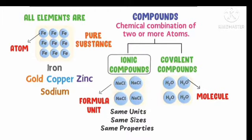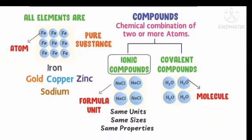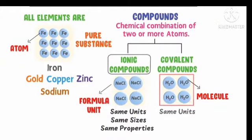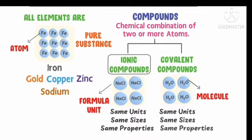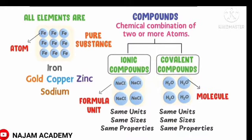Ionic compounds have same units, same sizes, same properties. Covalent compounds also have same units, same sizes, same properties. These compounds involve different atoms combination, while elements involve same atoms combination.